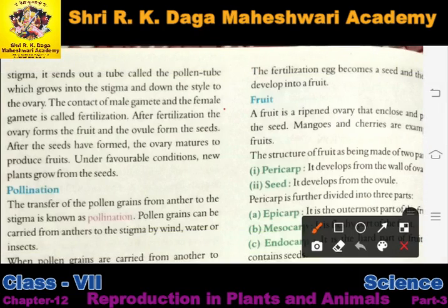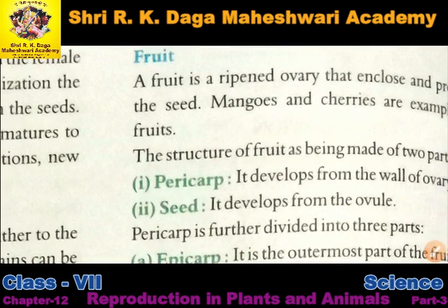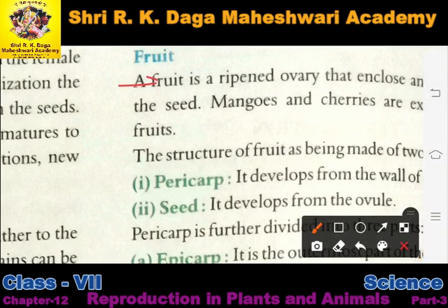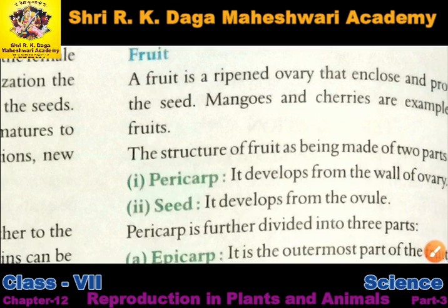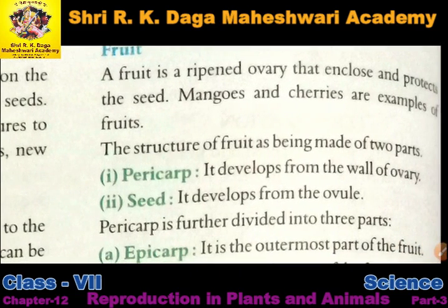Ab fruit ke baare mein hum detail mein study karenge — fruit ke parts kya kya hote hain. A fruit is a ripened ovary that encloses and protects the seed. Jo fruit hota hai woh basically ovary hoti hai jo seeds ko enclose aur protect karti hai. Mango and cherries are examples of this.